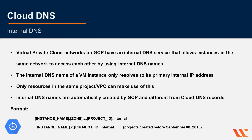VPC networks on GCP have an internal DNS service that allows instances in the same network to access each other using internal DNS names. The internal DNS name of a VM instance only resolves to its primary internal IP address, and only resources in the same project VPC can make use of this. Internal DNS names are automatically created by GCP and are different from Cloud DNS records.